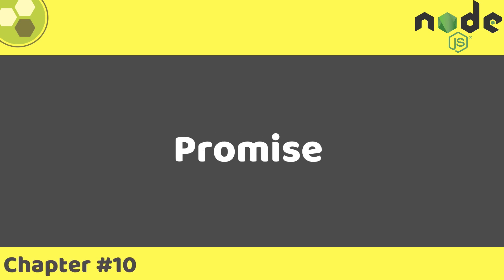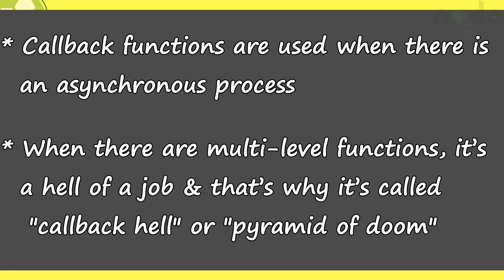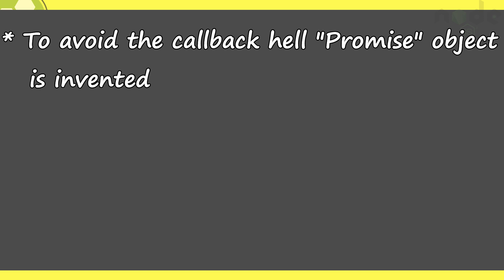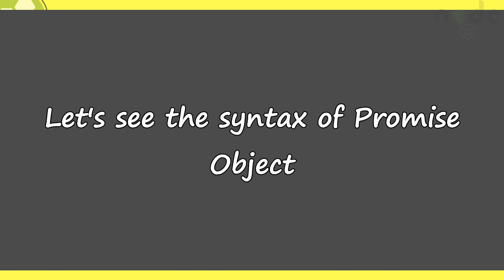In this section we are going to extend our discussion of asynchronous processes, that is the Promise object. Callback functions are used when there is an asynchronous process, but when there are multi-level functions it's callback hell or pyramid of doom, which we saw in the previous section. To save you from this hell, the Promise object is invented. In simple language, Promise is a better way to write those callback processes.